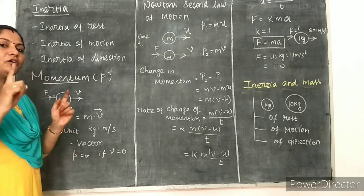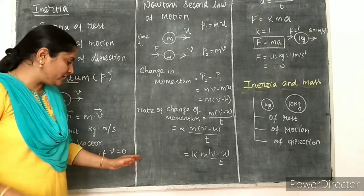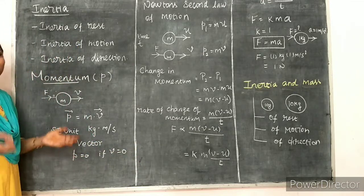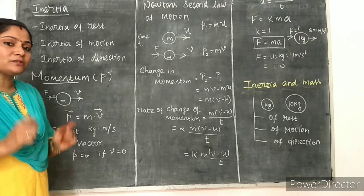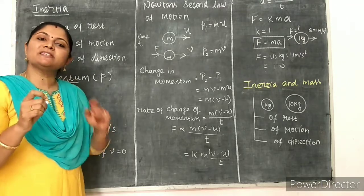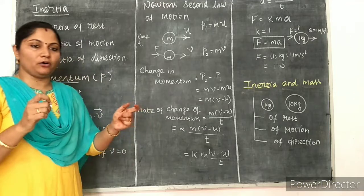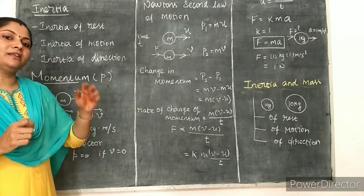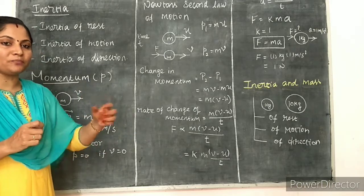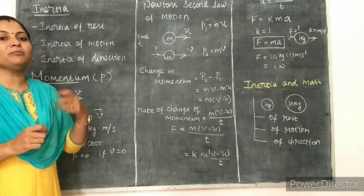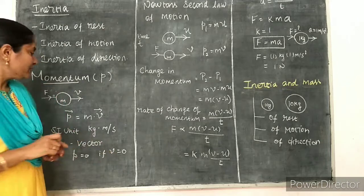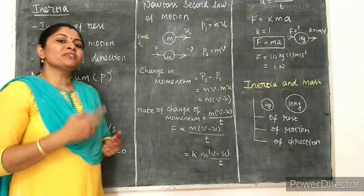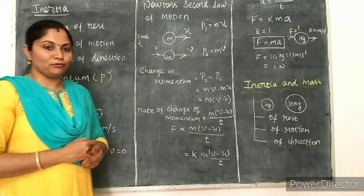If we consider the object is at rest, its velocity is definitely zero. At that time, the momentum is also zero. That is why we say momentum is a special characteristic of an object which is in motion. For objects at rest, the momentum is equal to zero. Momentum is very important in order to understand Newton's second law of motion.